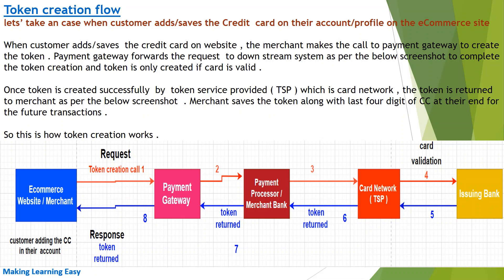The payment gateway then forwards that call to the payment processor — also called the merchant bank. In some cases, the payment processor and merchant bank can be the same entity. The payment processor routes the token creation call to the corresponding card network. So if the credit card is of Visa, then the payment processor would send the request to the Visa network; if it is Mastercard, then to the Mastercard network. Once the card network receives the token creation request, it sends the details to the issuing bank for card validation.